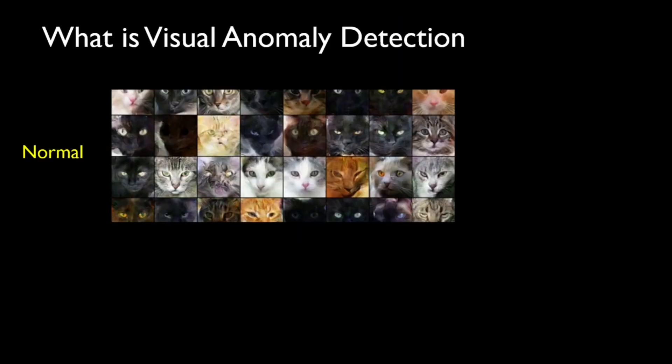All right. So with that, now let's discuss what is visual anomaly detection. So let's say if we, in this case, our goal is to detect whether the new sample that our model is receiving, it belongs to a predefined group or not. That's it.